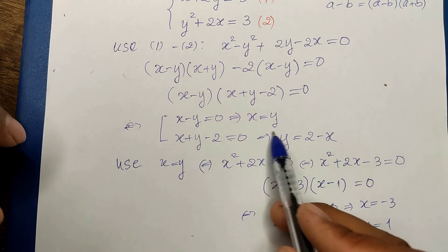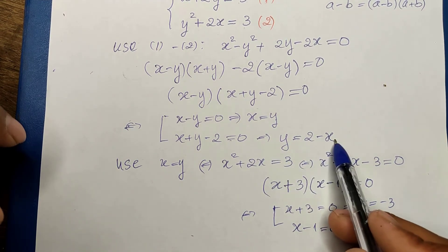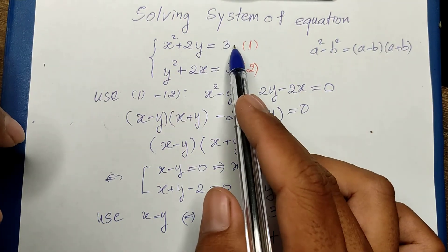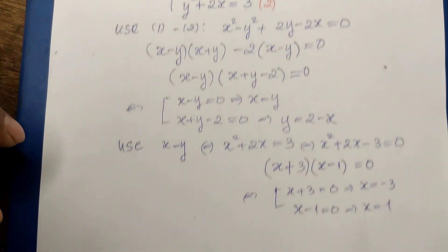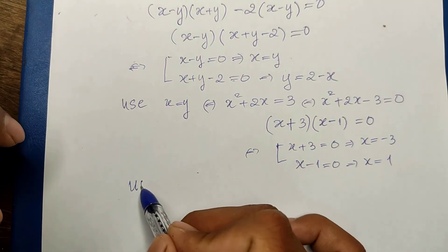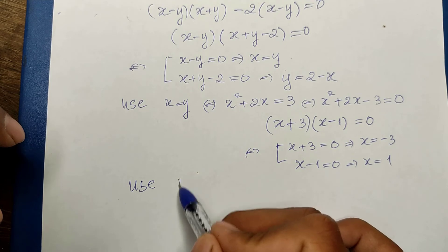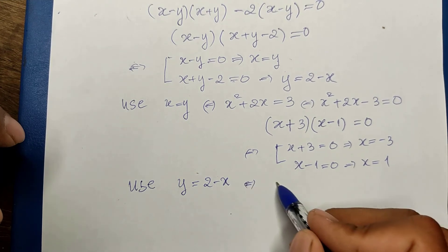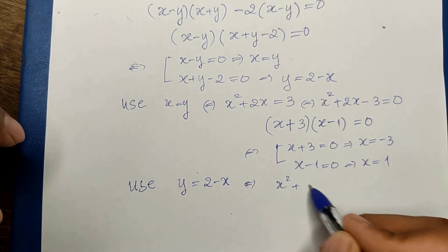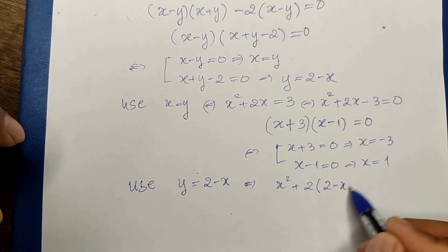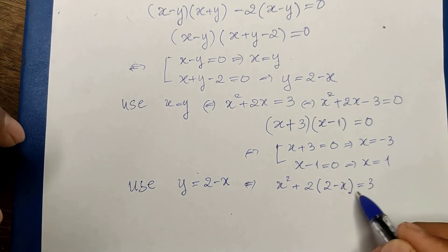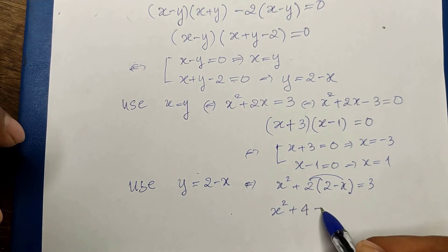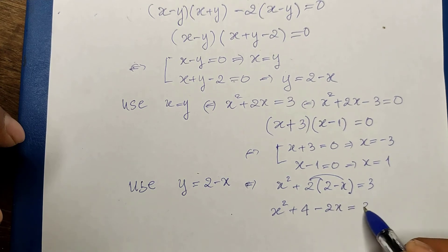Now we use the second case: y equals minus x. We replace y with minus x in the first equation. We get x squared plus 2 times (minus x) equals 3, which gives x squared minus 2x equals 3.